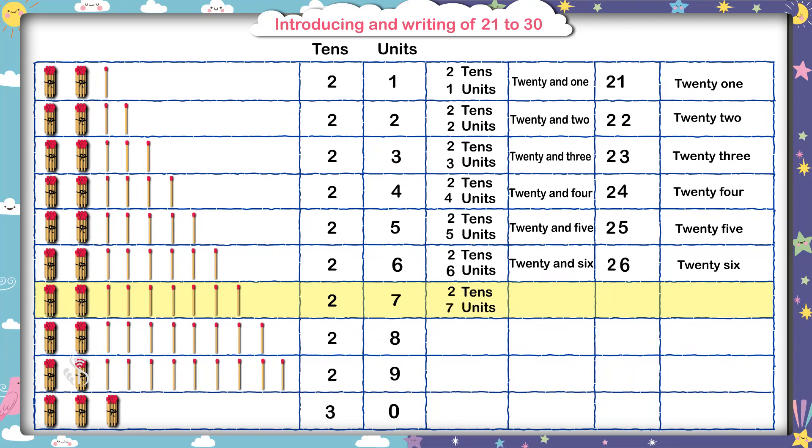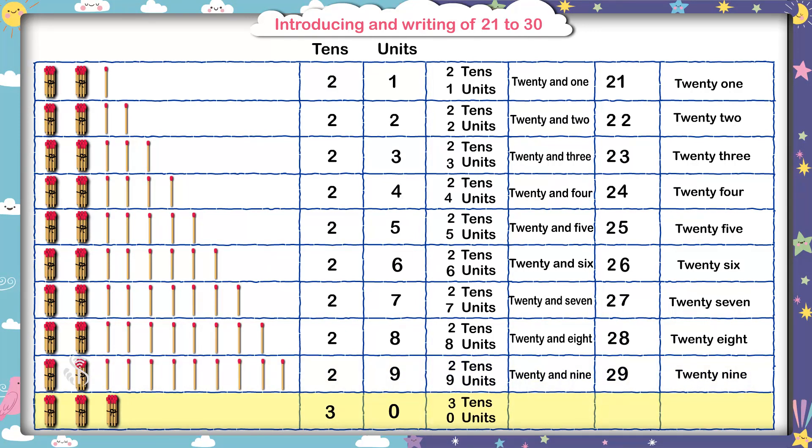2 tens 7 units, 27. 2 tens 8 units, 28. 2 tens 9 units, 29. 3 tens, 30.